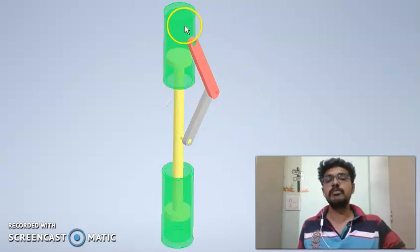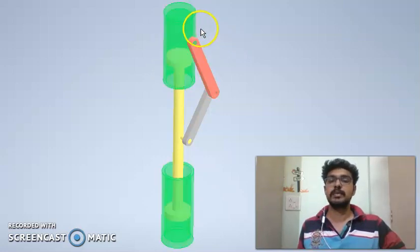Similarly link 4 will be that link which is having a sliding pair with some other link while a turning pair with link 3. Since this link is satisfying the criteria, this is called as link 4.